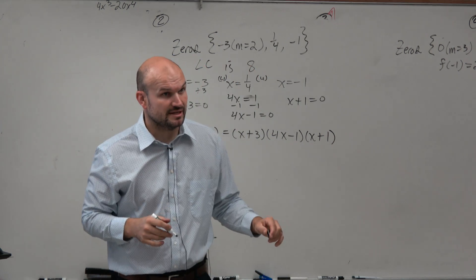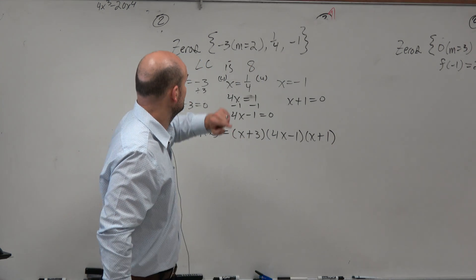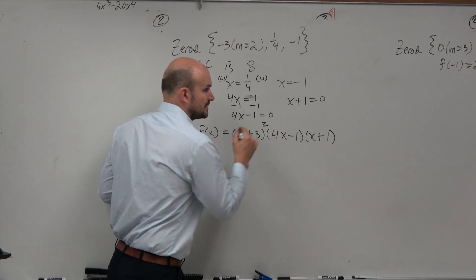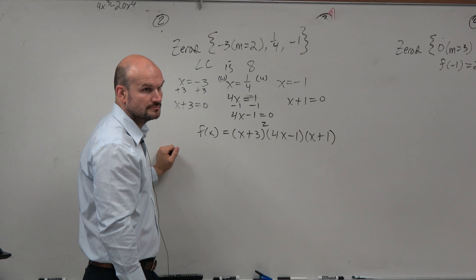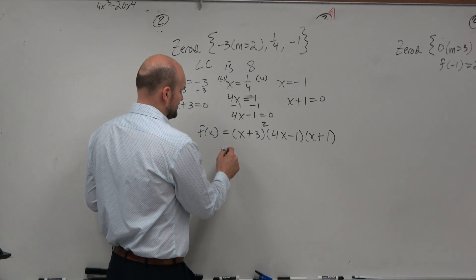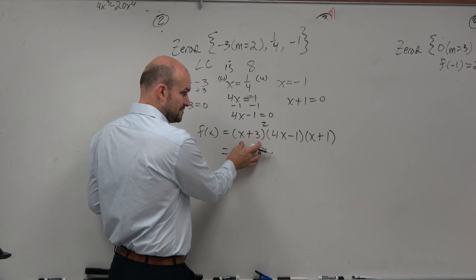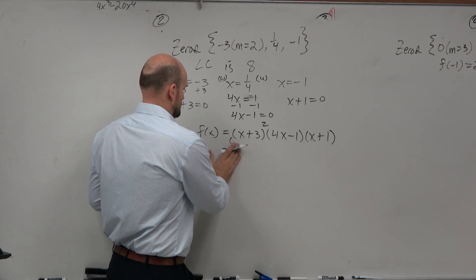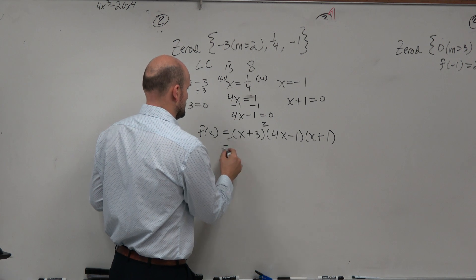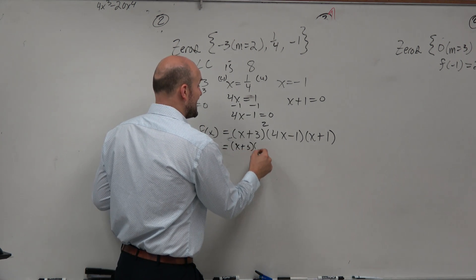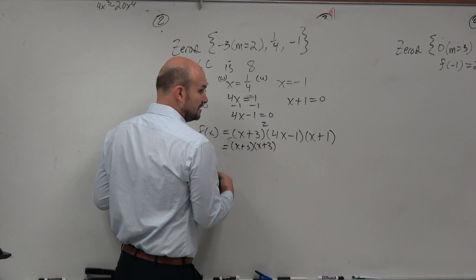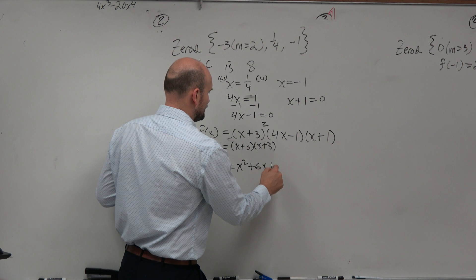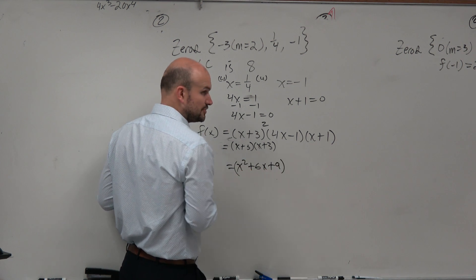But the original problem has multiplicity, right? That means negative 3 has a multiplicity of 2. So what I'm going to do is multiply that out. This is going to be x plus 3 times x plus 3, right? So that's going to give you x squared plus 6x plus 9 when you apply the distributive property or FOIL.